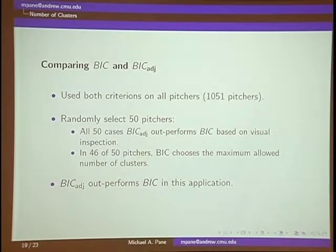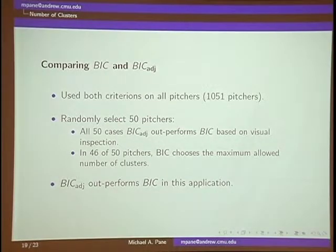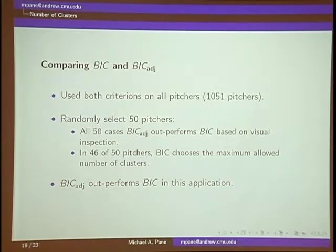Going back to the actual cluster number selector: we used both criteria on all pitchers. We randomly selected 50 pitchers, and in all 50 cases the BIC-adjusted — which penalizes for correlation — performed better than standard BIC. Standard BIC really just blew up the number of pitches assigned to a pitcher and not very accurately. We were able to conclude that at least for this baseball application, the BIC-adjusted outperforms BIC.